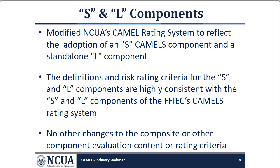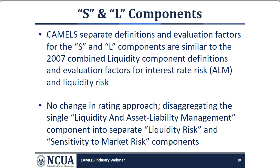As a result of transitioning from CAMEL to CAMELS, the definitions for the S and L components were revised and are highly consistent with the FFIEC's CAMELS rating system. The update to CAMELS does not include changes to the composite or other component definitions or rating criteria. The S and L will stand alone in the examination process. Liquidity reviews will continue to focus on the ability to fund the operations of the credit union through reasonable cost sources, and the sensitivity to market risk component will continue to focus on the impact interest rate changes have on earnings and capital.